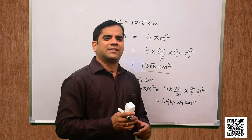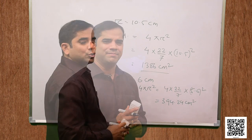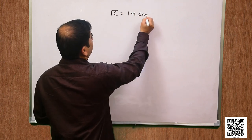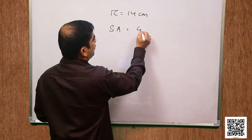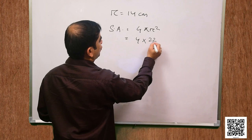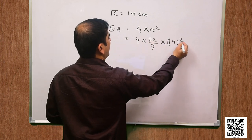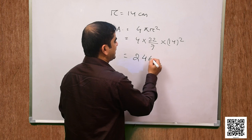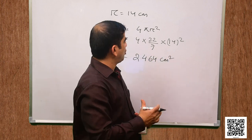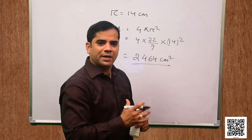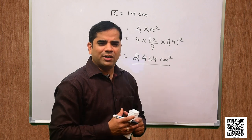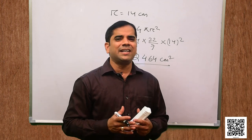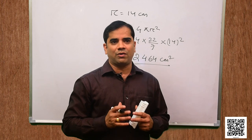Now for the third one, the radius is 14 cm. So r is equal to 14 cm. Surface area will be 4 pi r squared, that is 4 into 22 by 7 into 14 squared, and when we calculate we get 2464 cm squared. This is the surface area of the sphere having radius 14 cm. It is easy because when radius is given, we just apply the formula and calculate correctly.